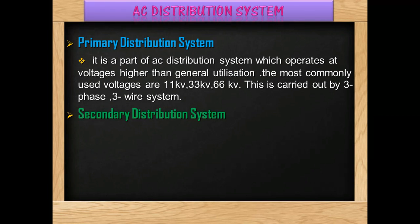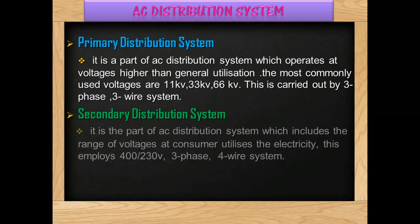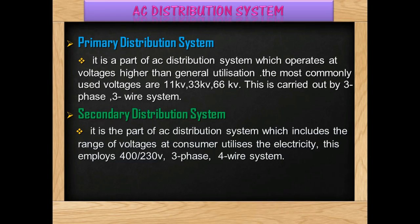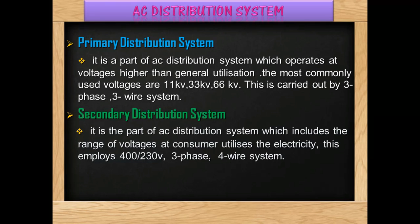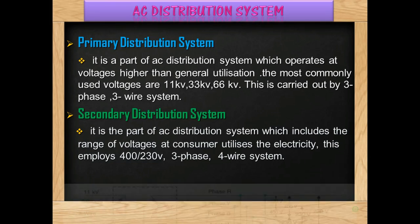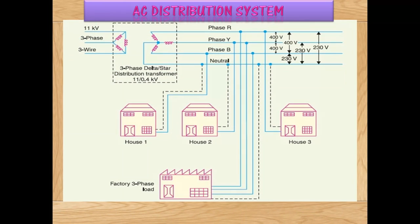Coming to the secondary distribution system, it is a part of AC distribution system which includes the range of voltage that consumers use for electricity. This uses a 400/230 V, 3-phase 4-wire system. All the houses are connected as shown in the figure.